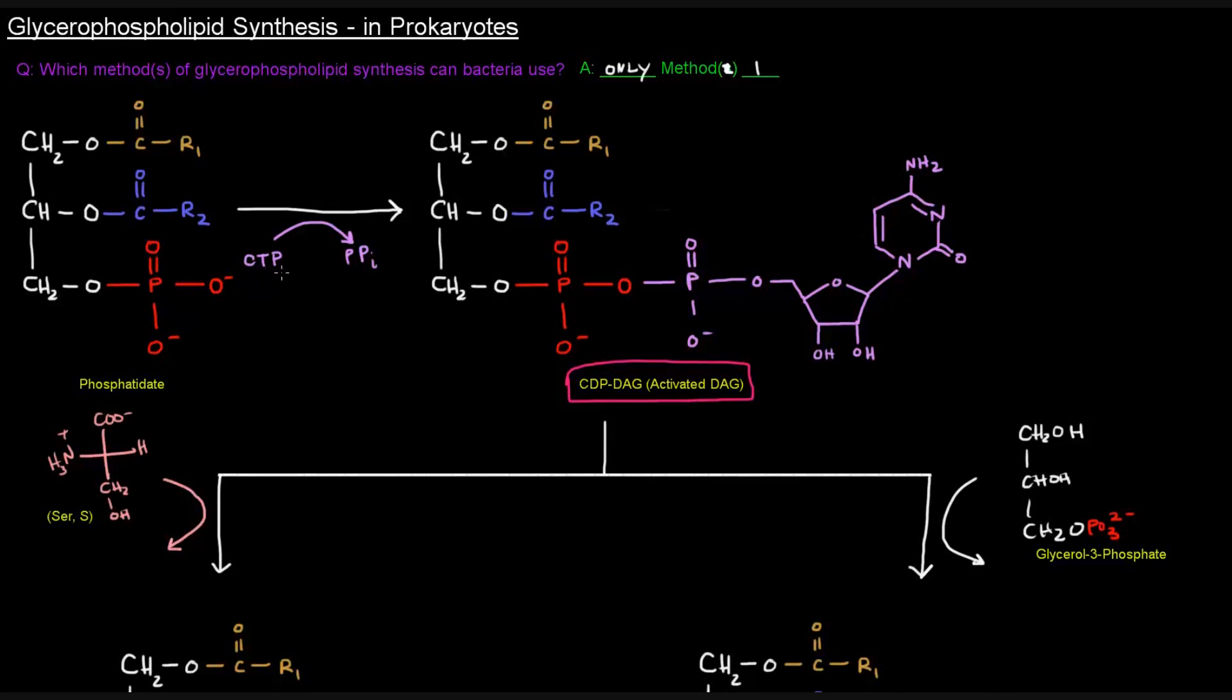CTP has three phosphates. Two of the phosphates come off as a pyrophosphate, so there's only one phosphate group left on that. And that basically means that we're adding a CMP portion to the existing phosphatidate. Now, what you'll notice is that the name doesn't seem to imply that.